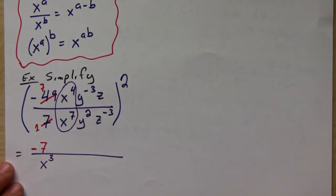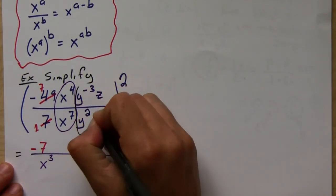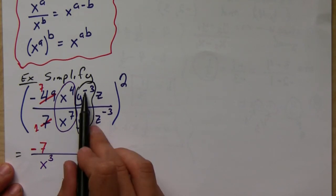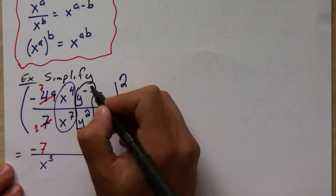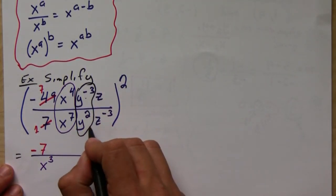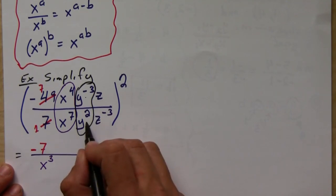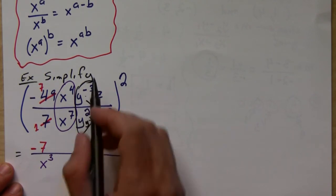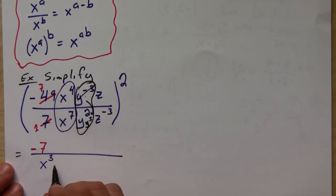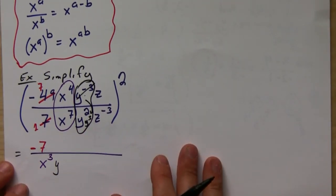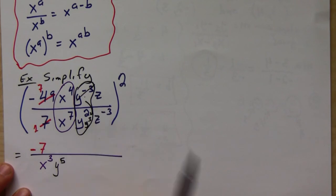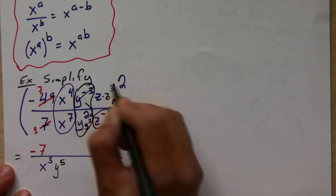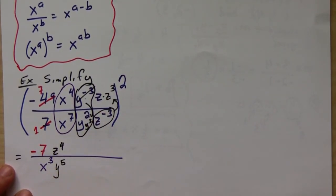Okay, so the next one: y to the negative three, we can make it positive by moving it down here. So this guy is going to come down as y to the positive third. If we combine these two down here, I'm going to end up with y to the positive five on the bottom because I add them. And the same thing for this one: I'm going to bring it up as z to the positive three, and so then I'll end up with z to the fourth on top.